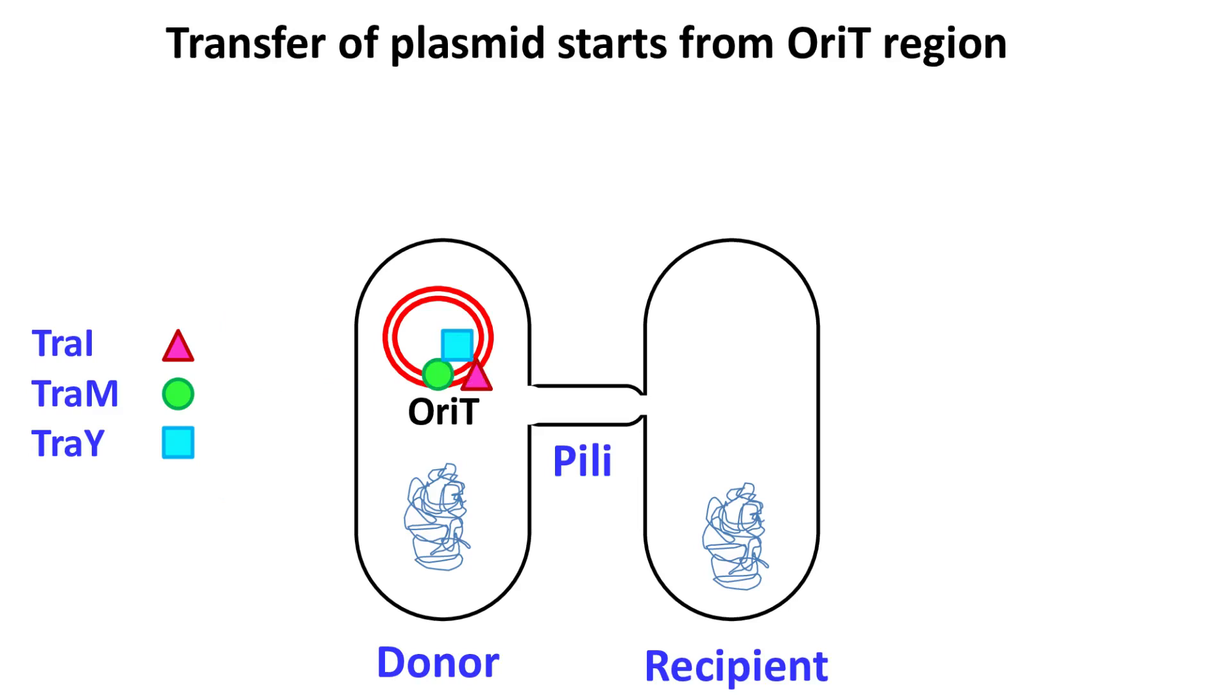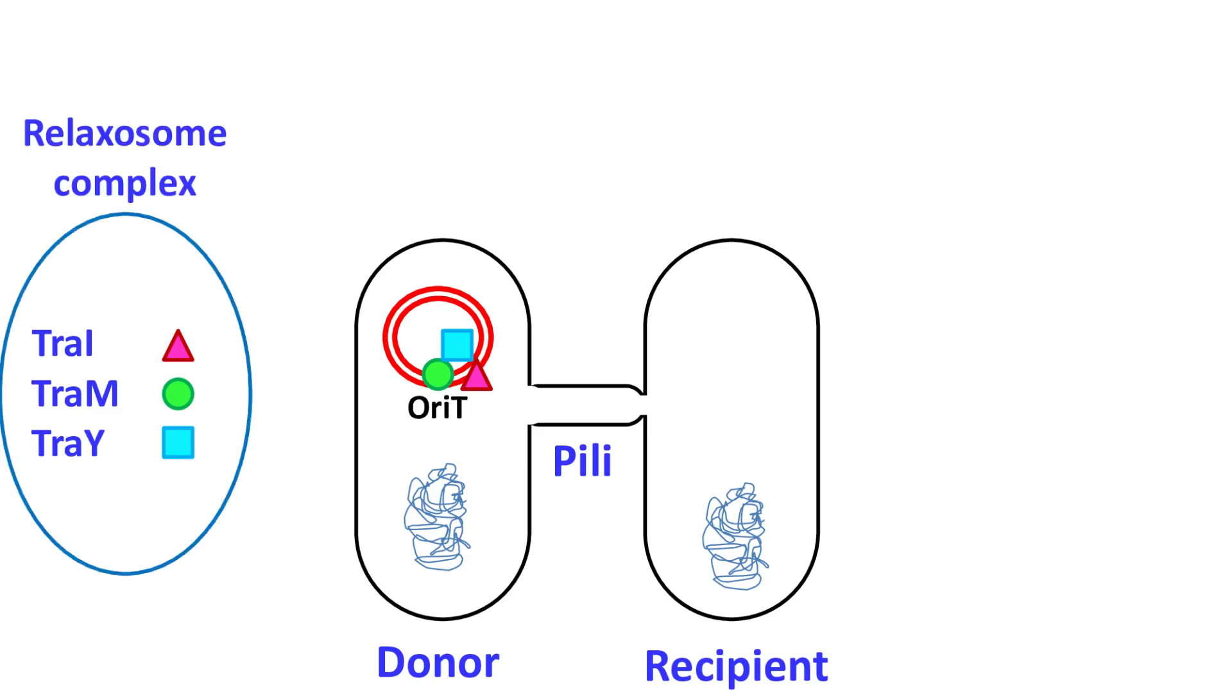TraI, TraM, and TraY make a structure known as the relaxosome. This structure plays an important role in the transfer of DNA from the donor cell to the recipient.